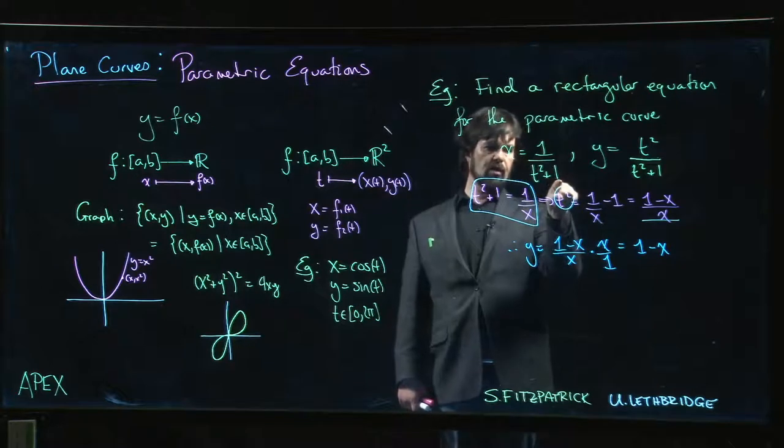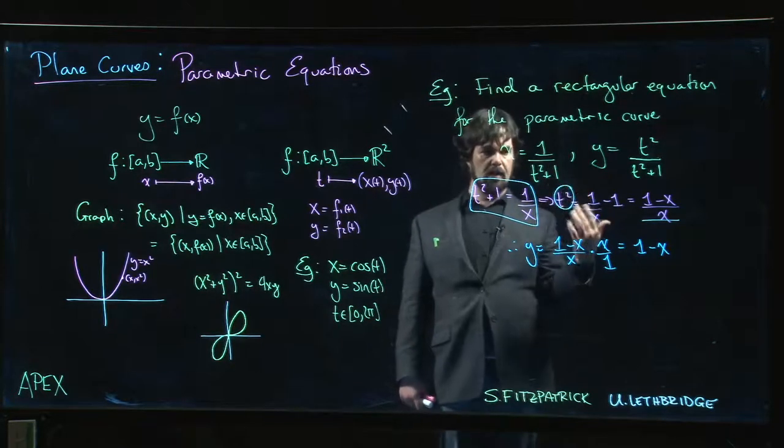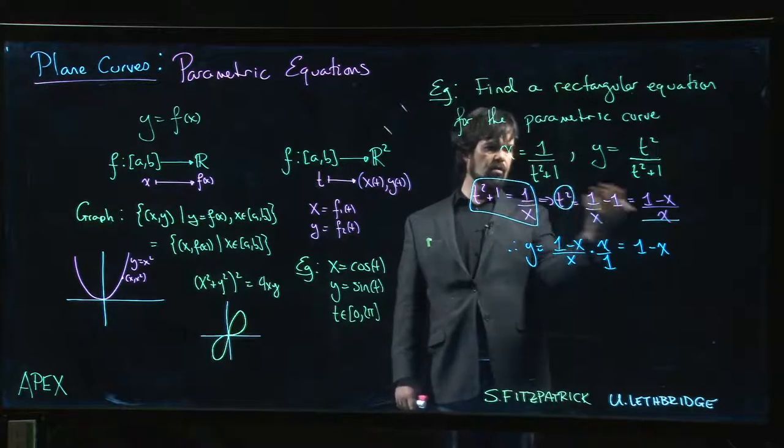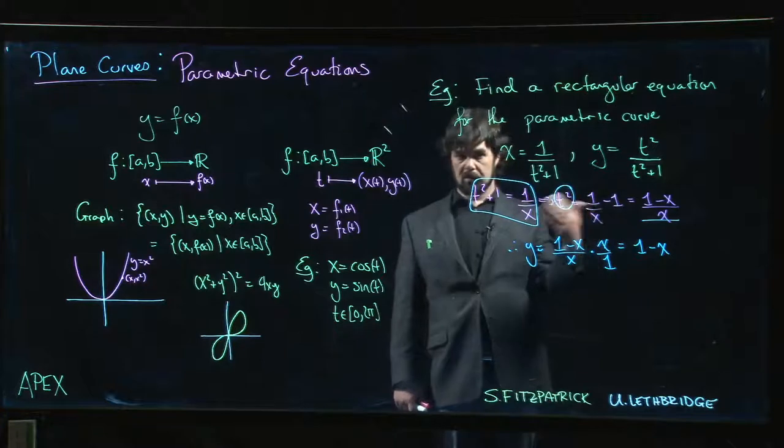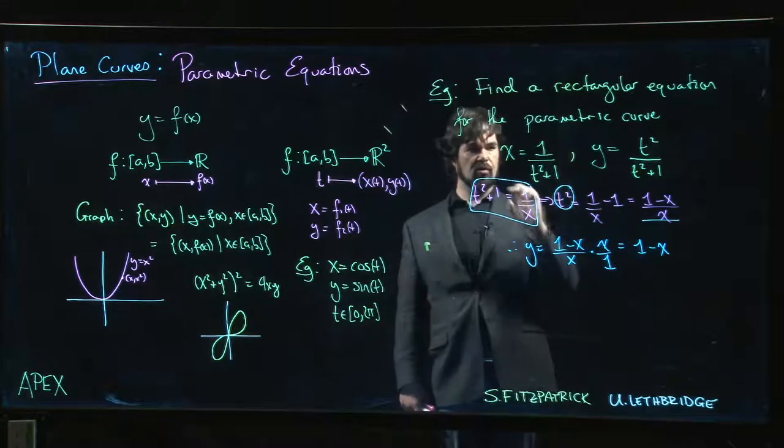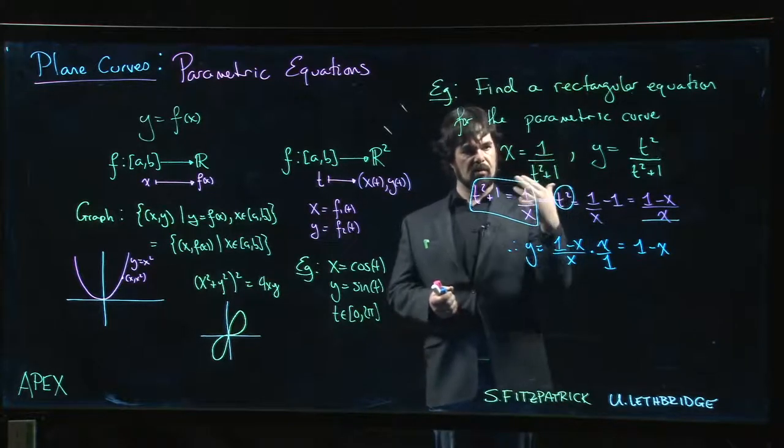The smallest the denominator can be is 1, so the biggest x can get is 1. But the denominator can approach 0 as t goes to infinity, so x can get arbitrarily close to 0.